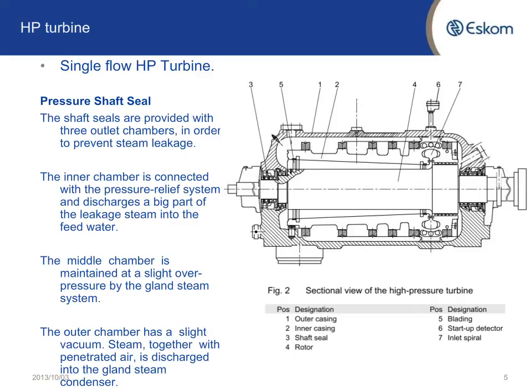The shaft seals are provided with three outlet chambers in order to prevent steam leakage. The inner chamber is connected with the pressure relief system and discharges a large part of the leakage steam into the feed water. The middle chamber is maintained at a slight overpressure by the gland steam system, and the outer chamber is at a slight vacuum. Steam together with penetrated air is discharged into the gland steam condenser. In my modelling of the glands, I didn't include the air that's going to come into the steam.